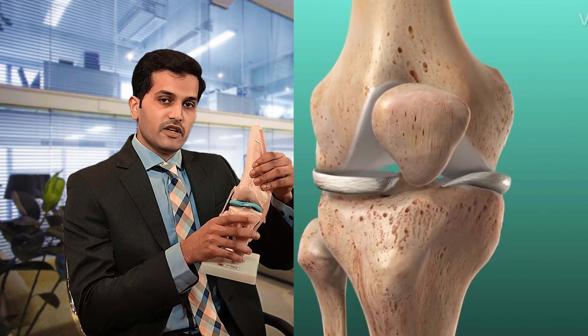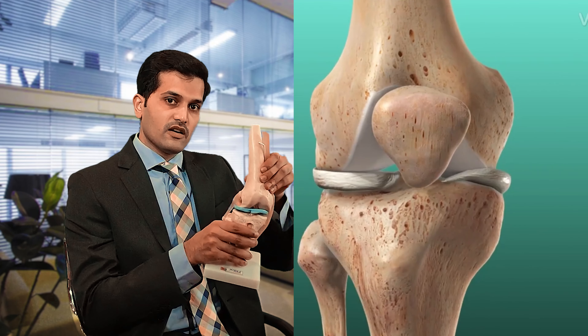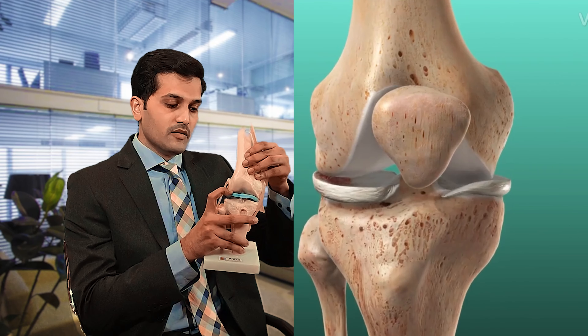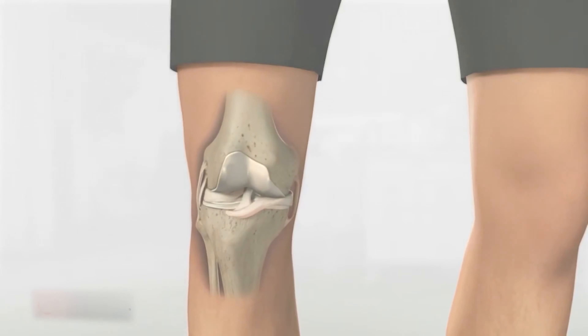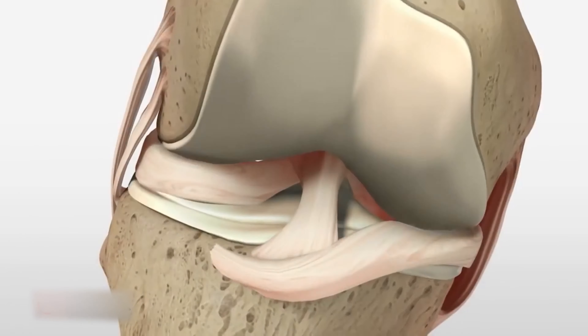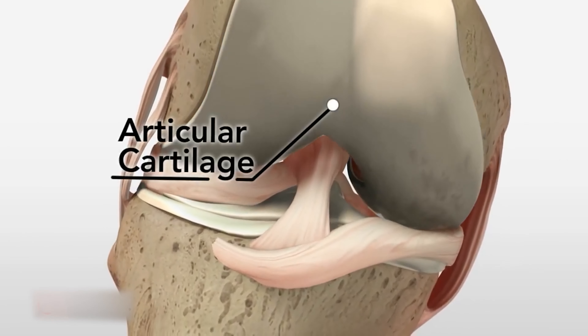If we look at the ACL ligament, the first most common symptom is a slip-out feeling. If we are in a position, it feels like a slip-out feeling. This is called giving way. This is why you have other ligaments that are affected — you can slip in front and back.